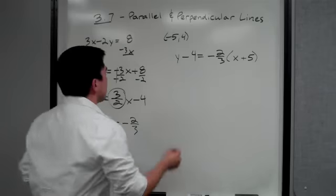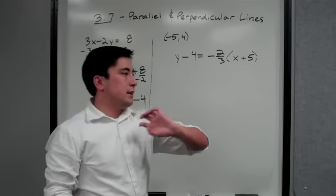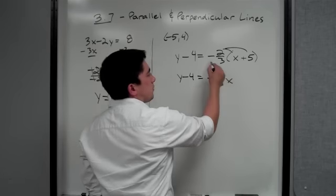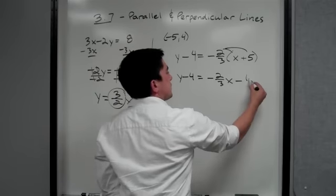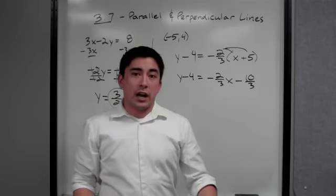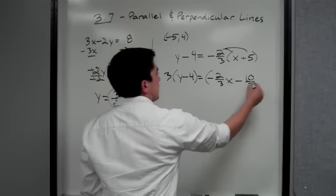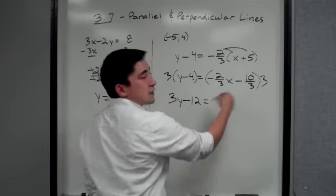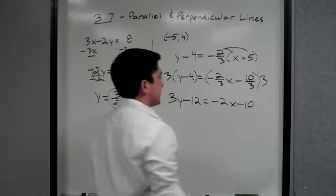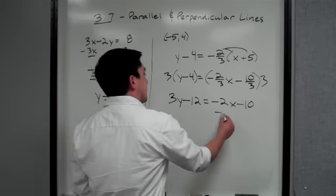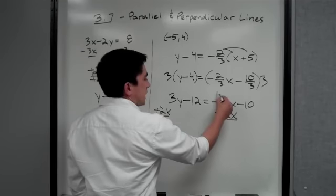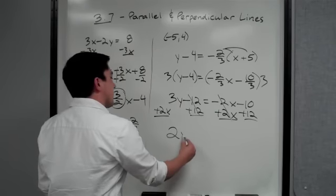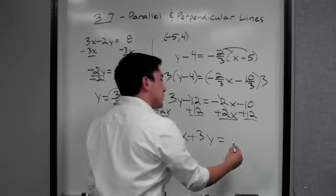We want standard form: ax plus by equals c. First, distribute: y minus 4 equals negative two-thirds x minus ten-thirds. We don't like fractions, so multiply both sides by 3: that gives us 3y minus 12 equals negative 2x minus 10. Then add 2x to both sides and add 12 to both sides: our final answer is 2x plus 3y equals 2.